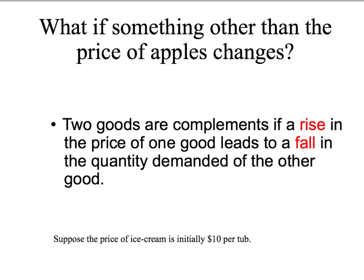Some examples: bread and butter tend to go together — if the price of bread goes up, you'll probably buy less butter. They're complements. For Jackie, she likes having apple pie and ice cream together. So if the price of ice cream goes up, she'll probably want fewer apples. A rise in the price of ice cream leads to a fall in the quantity of apples demanded — apples and ice cream are complements for Jackie.